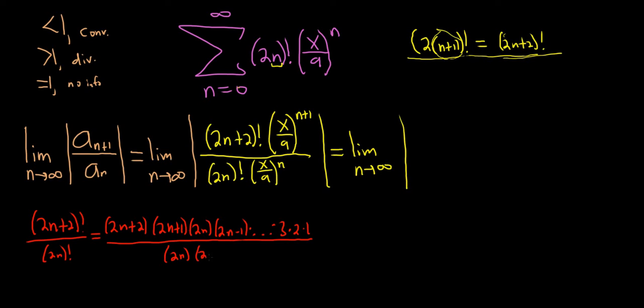And then 2n factorial is just 2n, and then subtract 1, so that's 2n minus 1, all the way until you get to 3, 2, 1. So I showed a lot of extra work here just to point out that this piece here is 2n factorial, which is what's on the bottom, right? So boom, all goes away. And we're just left with 2n plus 2, 2n plus 1. That's what we're left with there.